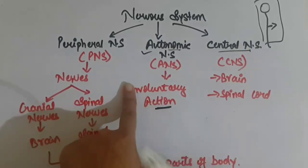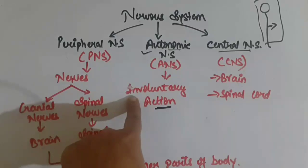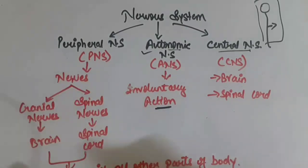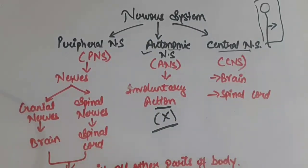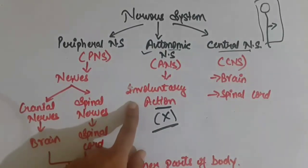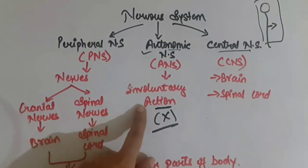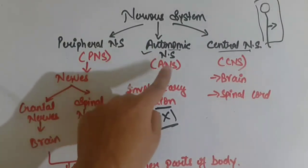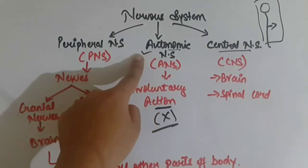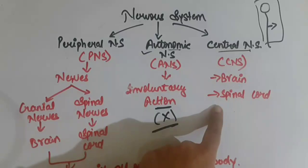Involuntary actions are those not in our control. Many actions in our body are involuntary — like the beating of your heart, breathing, and hunger — we can't control these. All functions not controlled by our will are known as involuntary actions, and such actions are controlled by the ANS, the autonomic nervous system.